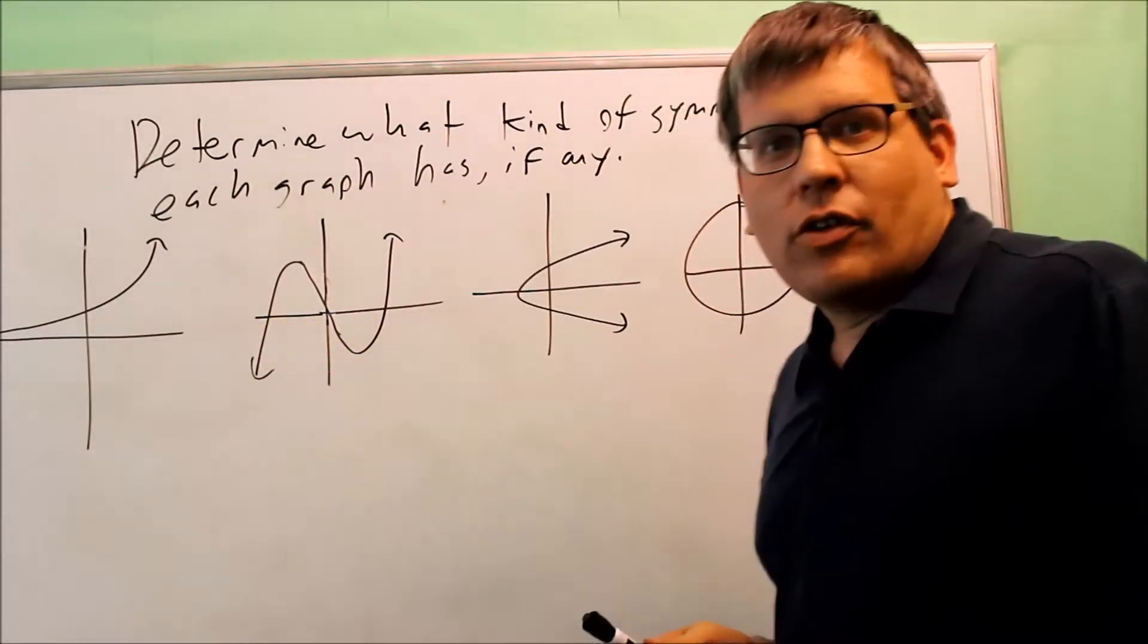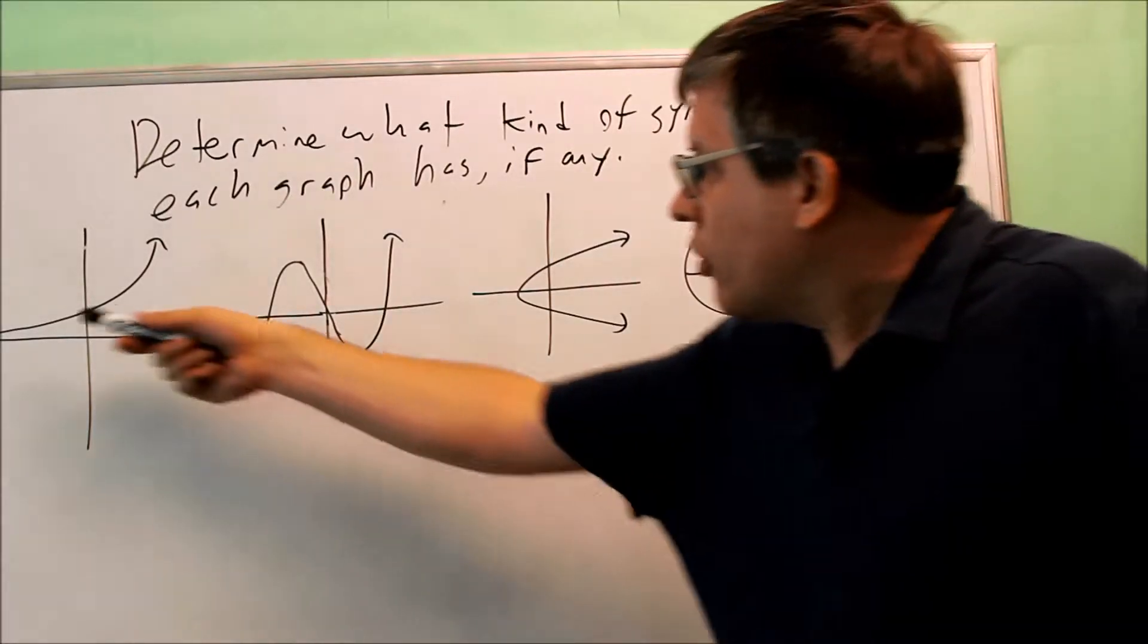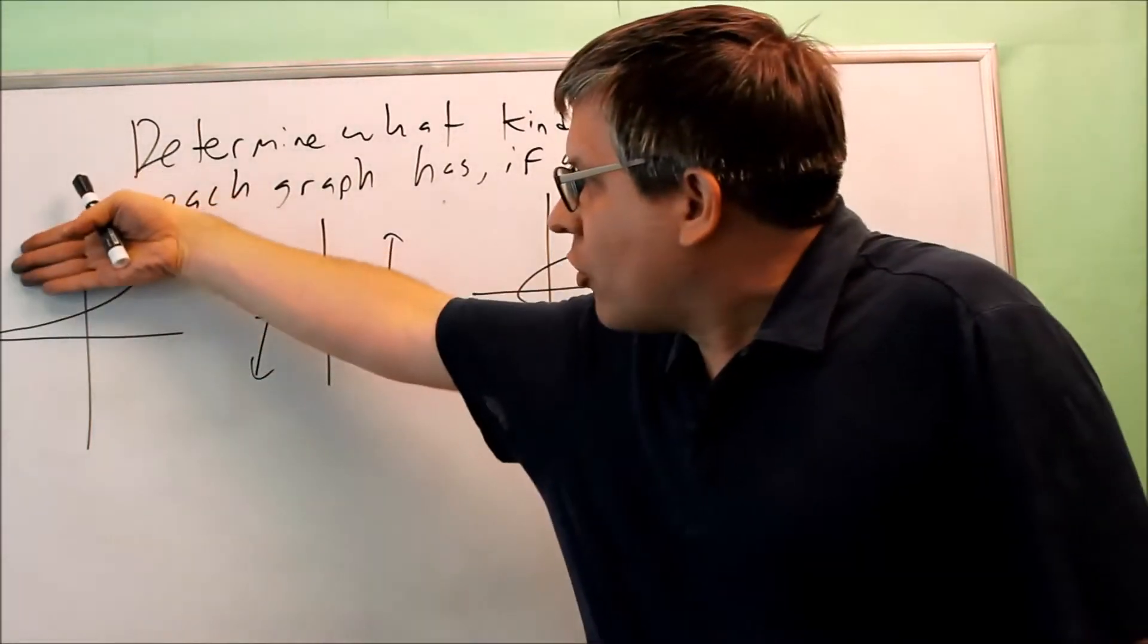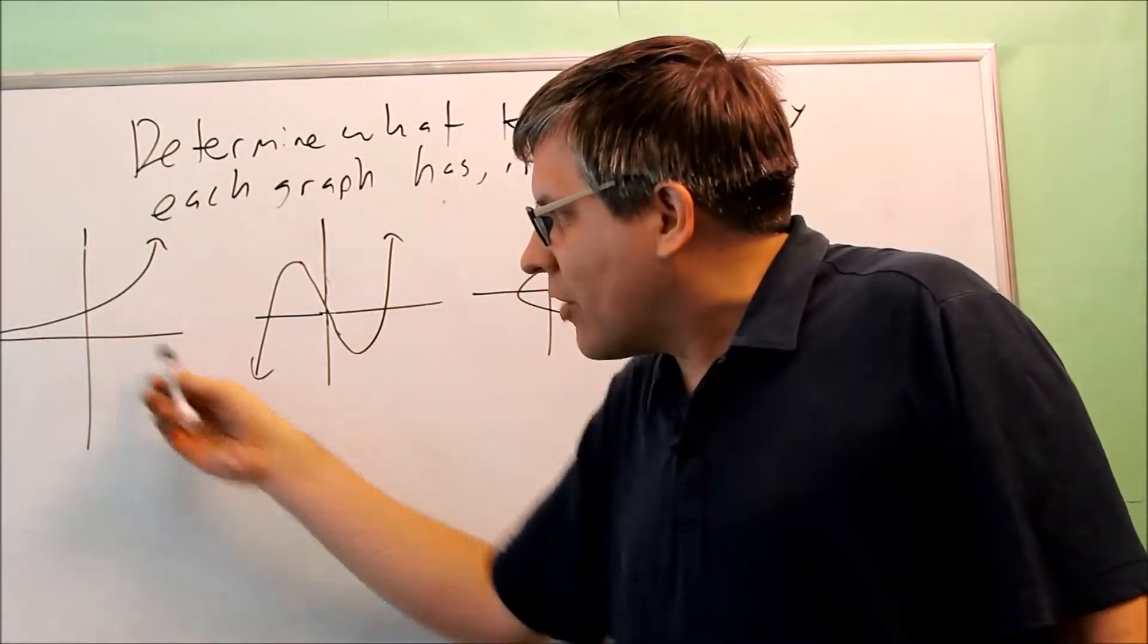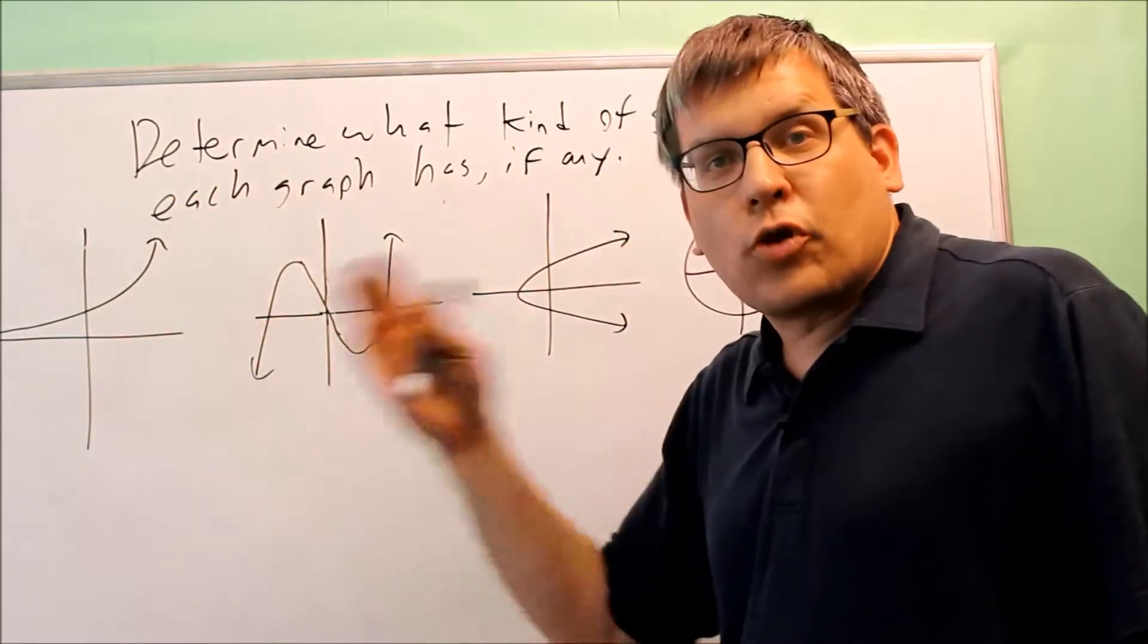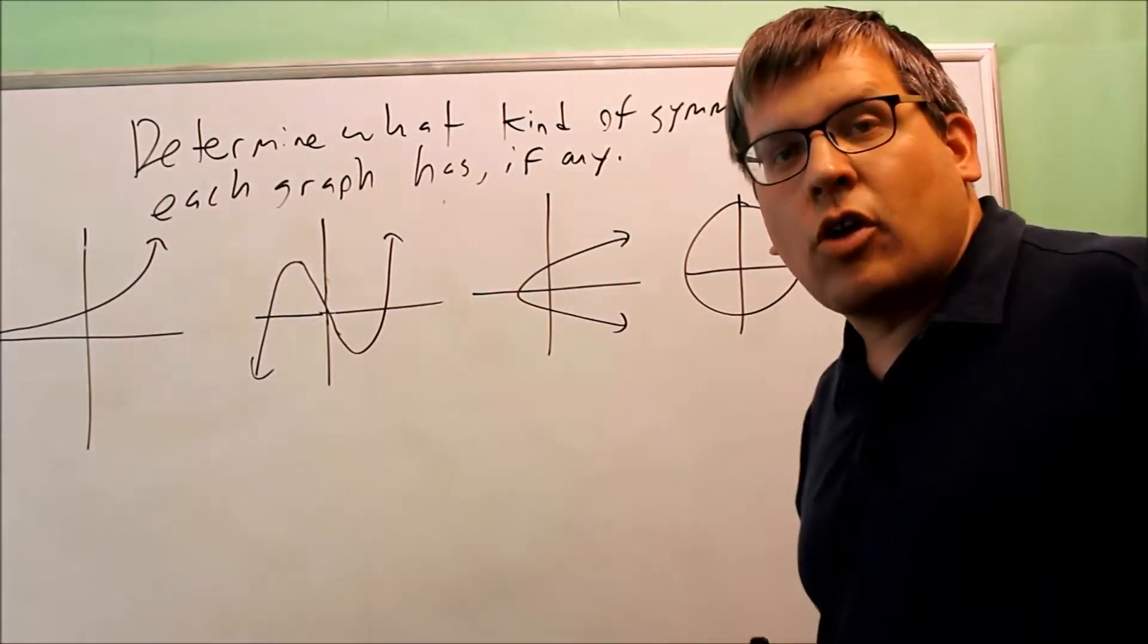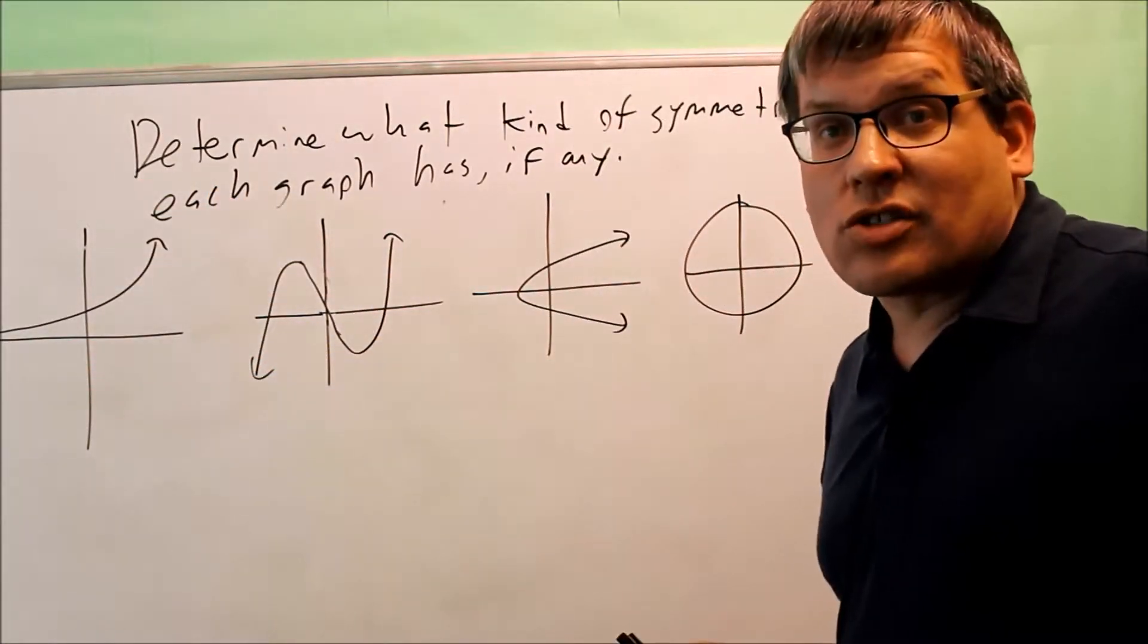For the first graph, I want to check first to see if it has x-axis symmetry. That means that the x-axis would be a fold line. So if I fold this over the x-axis, the graph has nothing to lay on top of it. If I fold it over and it lays perfectly on top of itself, then that's when I know it has that kind of symmetry. Because it doesn't overlap anything, it does not have x-axis symmetry.